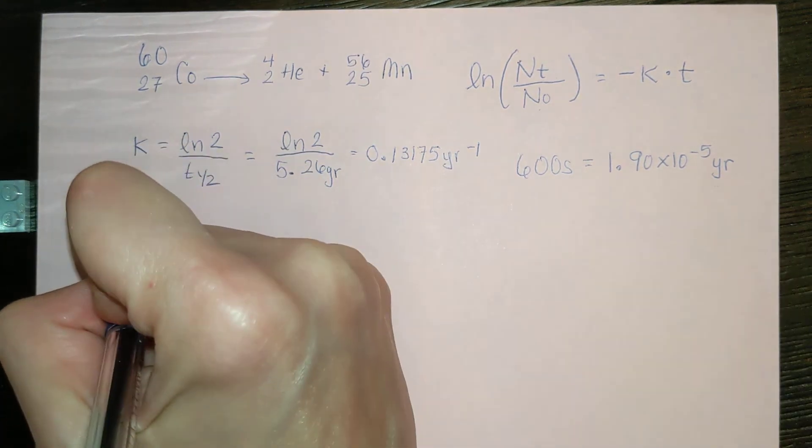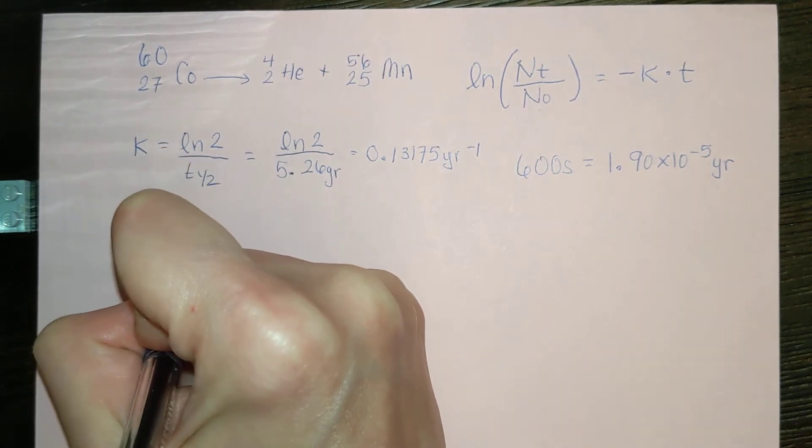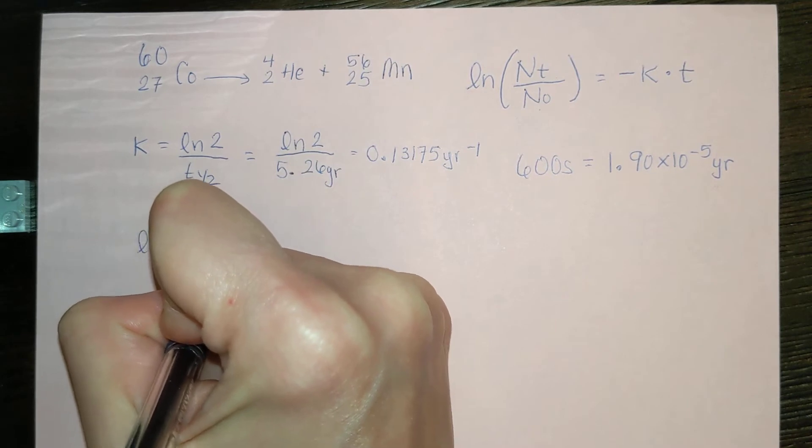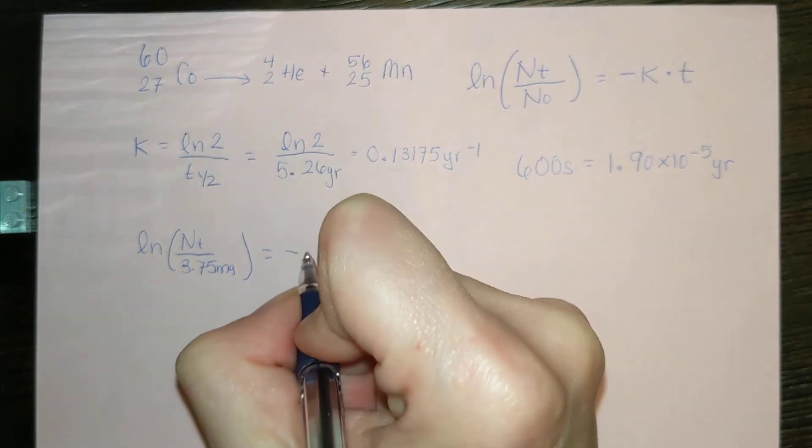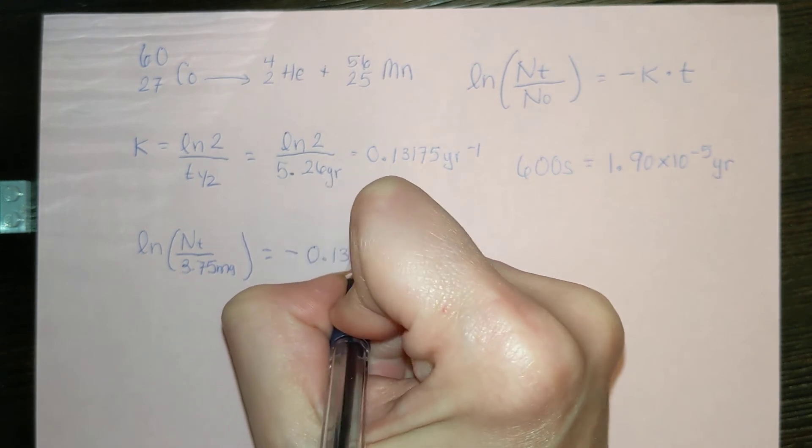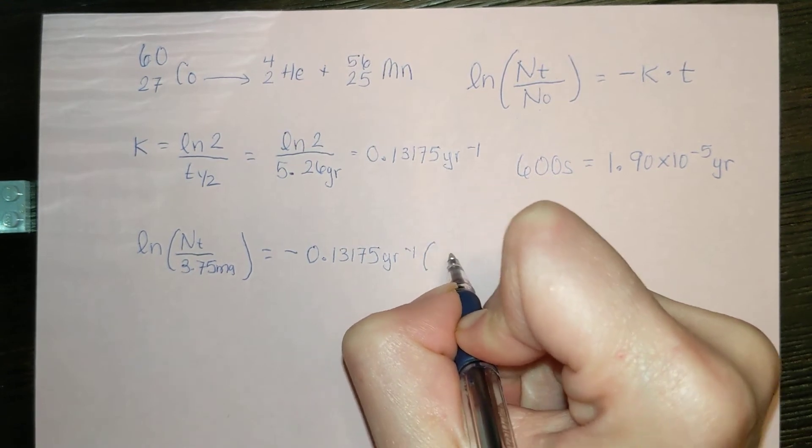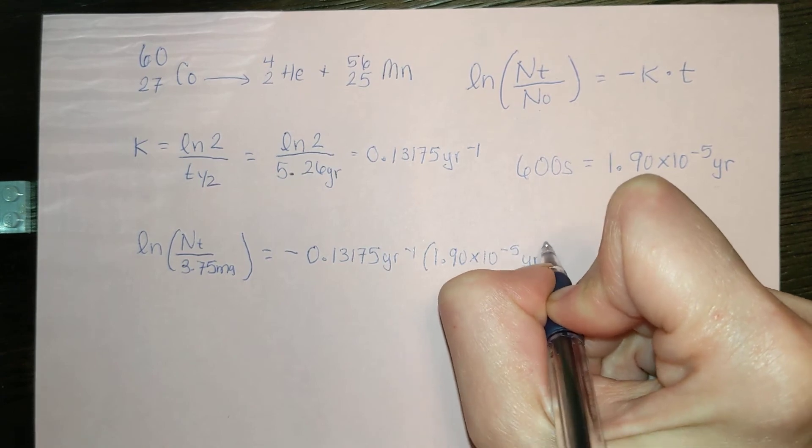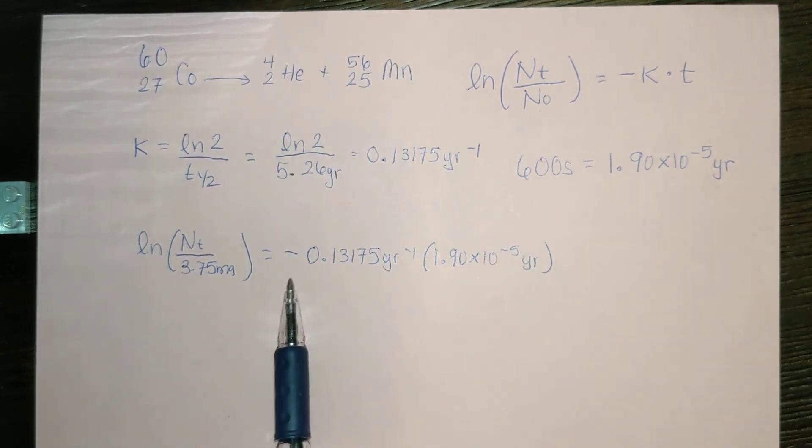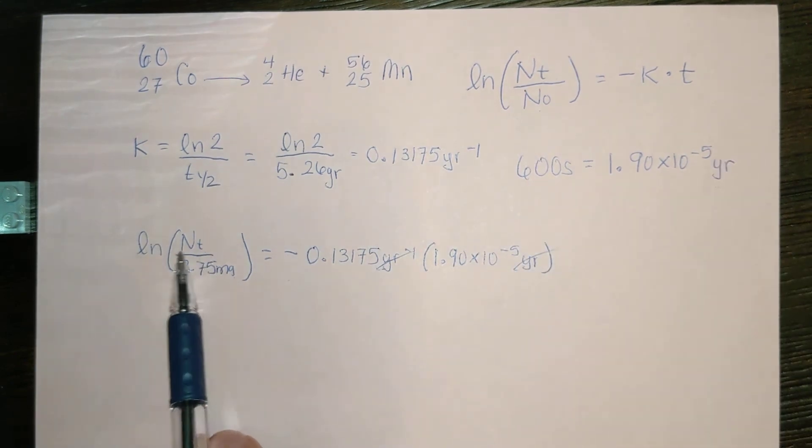Now let's put it all together. We have natural log of n at time t over our 3.75 milligrams. That equals negative k, or negative 0.13175 years minus 1 times our t, 1.90 times 10 to the minus 5 years. Putting all of our things in here, this cancels with this. This will be unitless, but when we solve for nt, it will have the same units as this, or it will have the units of milligrams.